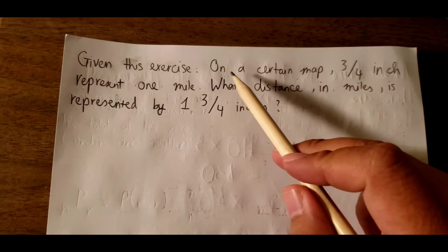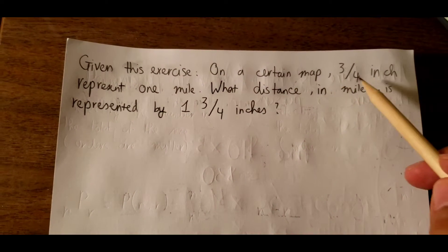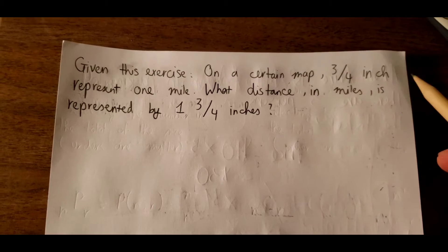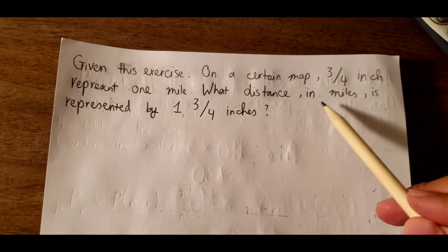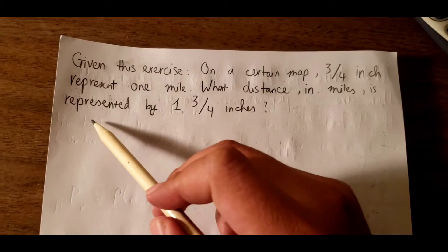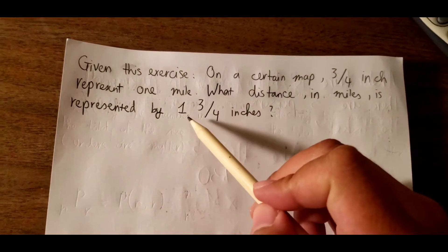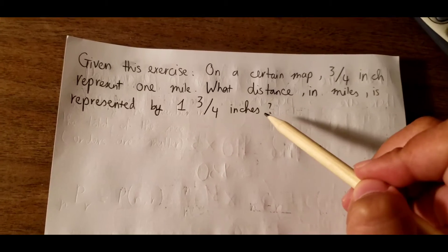For example, on a certain map, 3 over 4 inches represents one mile. What distance in miles is represented by 1 and 3 over 4 inches?